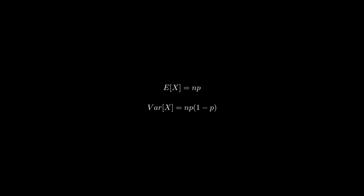With respect to the mean and variance, the expected value is equal to n times p, and the variance is equal to n times p times (1 − p). The binomial distribution answers questions about the likelihood of getting a certain number of successes or failures in fixed Bernoulli experiments. It helps us answer questions where we know how many experiments will happen and the probability of a success or failure.